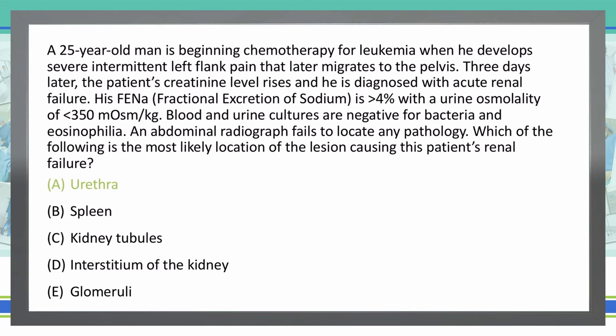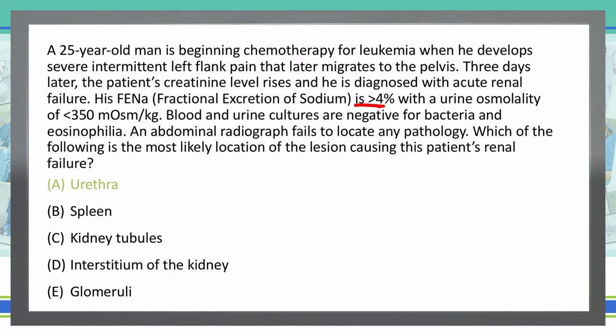When those stones start to move south down the ureters, they cause pain. The FENa here is greater than 4%, which is a consistent number with post-renal failure — something beyond the kidneys that's causing problems. It's also likely that the kidney stone passed through the ureters and then into the urethra, causing that pelvic pain. You might be confused because the abdominal radiograph failed to locate any pathology. The problem is these are more than likely uric acid stones, not calcium stones. Uric acid stones are radiolucent and cannot be seen on x-ray films, whereas calcium stones can.